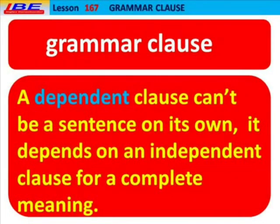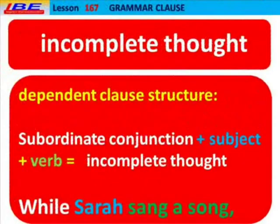A dependent clause can't be a sentence on its own. It depends on an independent clause for a complete meaning. A dependent clause structure is: Subordinate Conjunction plus Subject plus Verb — and the thought is incomplete.